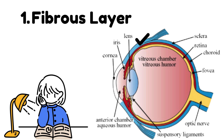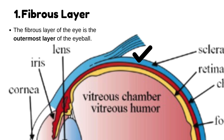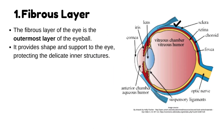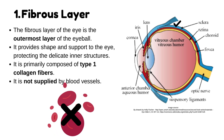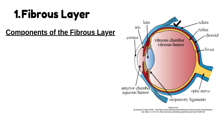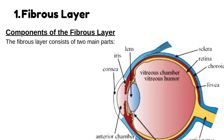Let's start with the fibrous layer, the eye's outermost layer. The fibrous layer of the eye is the outermost layer of the eyeball. It provides shape and support to the eye, protecting the delicate inner structures. It is primarily composed of type 1 collagen fibers and is not supplied by blood vessels. The fibrous layer consists of two main parts: the sclera and the cornea.